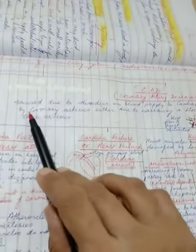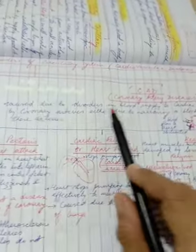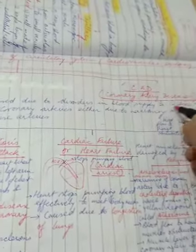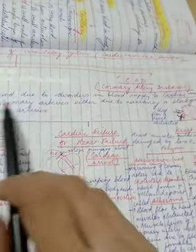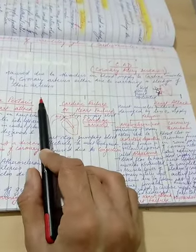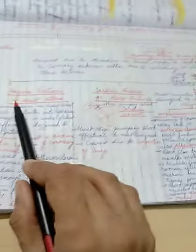Okay then we come to the second major category of CAD what we call as coronary artery diseases. What are these children? These are caused due to disorders in blood supply to cardiac muscles, and this supply is by coronary arteries either due to narrowing or blockage of the arteries. So if you remember children cholesterol is the biggest enemy in this case.